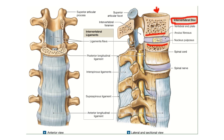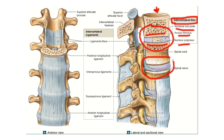The intervertebral disc has several parts: the vertebral end plate, the annulus fibrosus — which is the peripheral fibrous part — and the central part is called the nucleus pulposus. The vertebral end plate is in contact with the vertebral body. This intervertebral joint is present between all the vertebrae, which is why it is called the intervertebral joint.